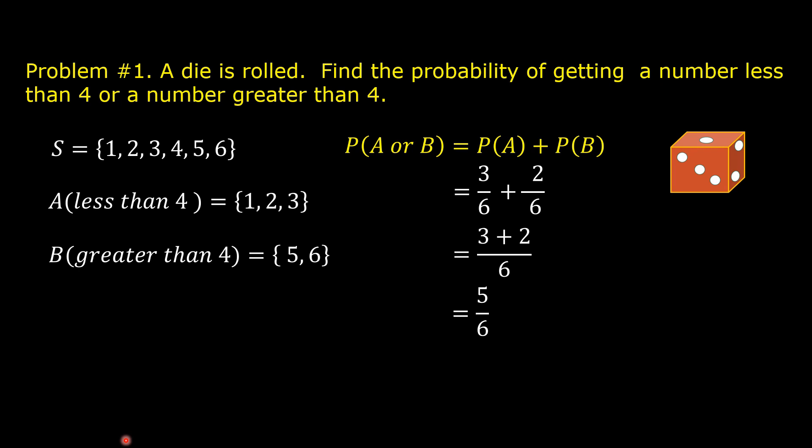The probability of getting a number less than 4 or a number greater than 4 is equal to 5 over 6.